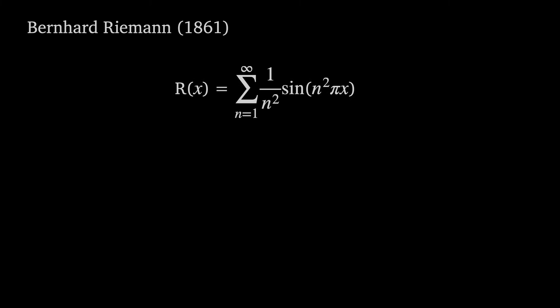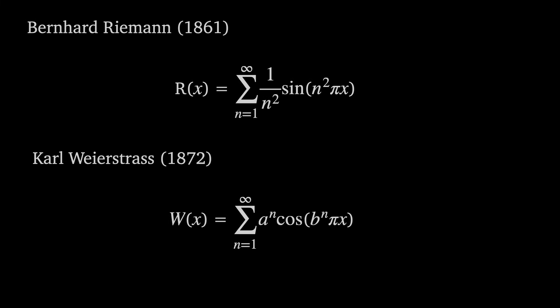This clearly inspired Weierstrass. In a public lecture 10 years later, he said that he'd tried himself to find a proof but had failed. We now know that Riemann's function is an almost-nowhere differentiable function and actually has points that are differentiable, just like Ampere had said. What Weierstrass had found in the process, however, was an actual nowhere-differentiable function of his own.